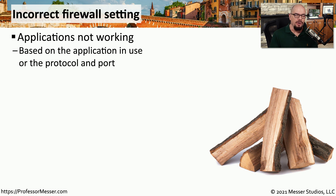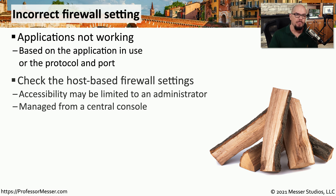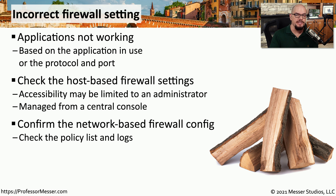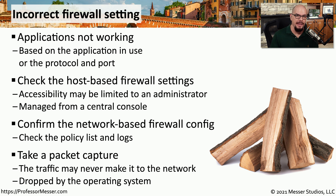Firewalls on your network — protecting your data center or sitting between you and the internet — may have configurations that limit certain applications, port numbers, or protocols, causing your applications to not work properly. You also need to consider host-based firewalls, which are usually enabled on all local workstations. Look at those settings to see what an administrator is allowing or blocking. Then check your network-based firewall for rules that would prevent an application from communicating. One of the best ways to troubleshoot this is with a packet capture — you can show that data was sent out and nothing was received back, indicating a firewall configuration problem.